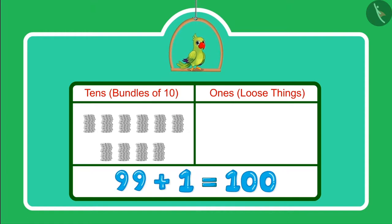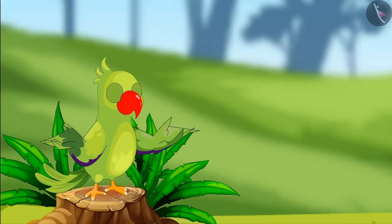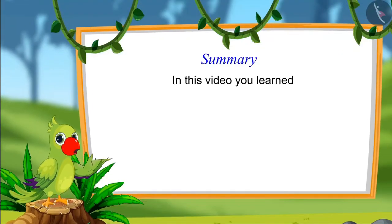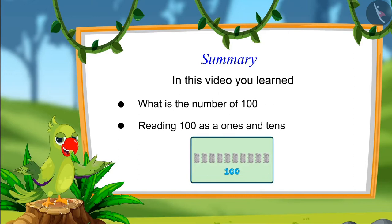So 100 comes after 99 which we write like this. So children, that was all for 100 and learning to read 100 as 1s and 10s.